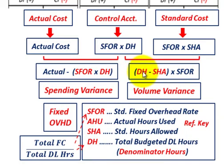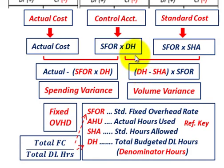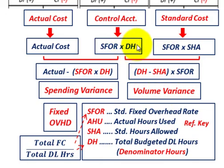The volume variance is the difference between denominator hours and standard hours allowed, times the standard fixed overhead rate. You factor out SFOR from the control account and standard cost — comparing denominator hours to standard hours allowed. That difference times SFOR gives you the volume variance. For the spending variance, you compare actual cost to control account; for volume variance, you compare control account to standard cost.